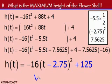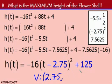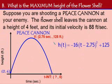Now it's pretty easy to get our vertex. By changing the sign of our negative 2.75, we get a positive 2.75 and our 125. So our vertex for our particular equation is 2.75, 125. So now that I've found my vertex, I can now answer my question. What is the maximum height of my flower shell? The maximum height of my flower shell is 125 feet at 2.75 seconds.